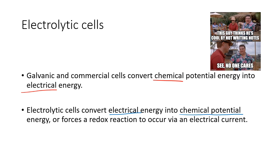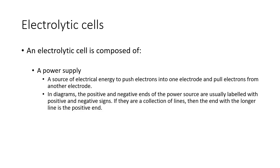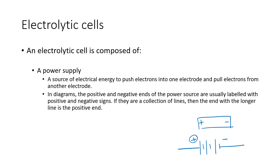An electrolytic cell is composed of a couple of different parts. Number one is a power supply — a source of electrical energy to push electrons into one electrode and pull electrons from another. In diagrams, the positive and negative signs are on the end of a power source. If they're represented as a collection of lines, the longer end is the positive end and the shorter end is the negative end.